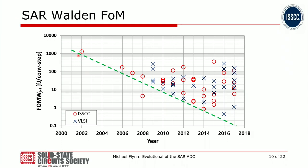After 2002, the performance of SAR ADCs improved greatly. This graph shows the Walden energy efficiency of SAR ADCs versus year, for SAR ADC papers presented at both ISSCC and VLSI Symposium. Back in 2002, the SAR ADC had an energy efficiency of about a picojoule per conversion step. Just last year, the energy efficiency had improved to something like less than one femtojoule per conversion step. That's an amazing three orders of magnitude improvement in energy efficiency — a remarkable story.